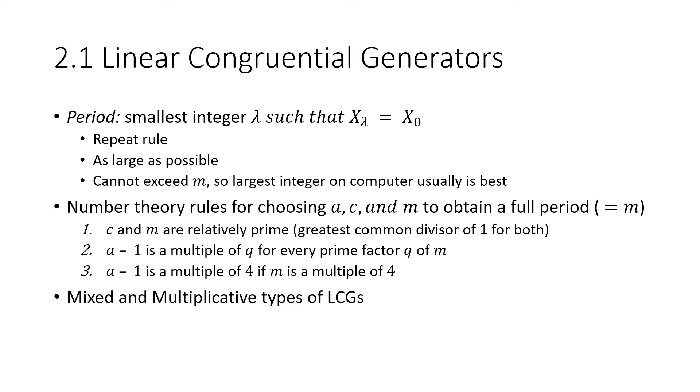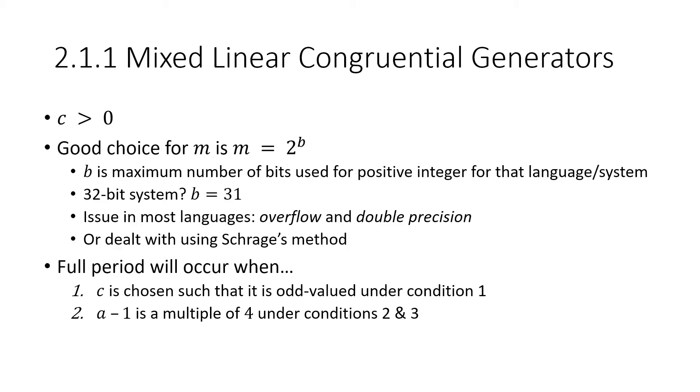There's two types of linear congruential generators. One of them is mixed and the other one is multiplicative. A mixed linear congruential generator means that your C is greater than zero. So you're adding something that is not zero to your generator. A good choice for M in this is two to the B. And B would be the maximum number of bits that you can use in the system or the language that you're using. So if it's a 32-bit system, we want B to be 31.